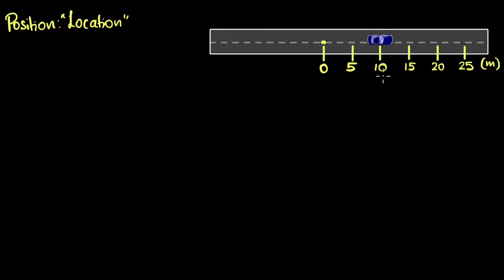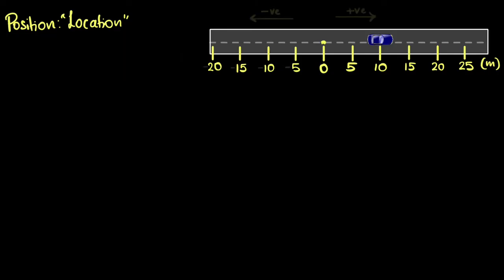But there's a problem: if I just said the position is 10 meters, we wouldn't know whether that's 10 meters to the right or 10 meters to the left. One way to resolve this is to say the position is 10 meters to the right. Another way is to choose all markings on the right side of the origin to be positive, and everything on the left side to be negative. We can choose the left side to be positive as well — you're completely free to decide.